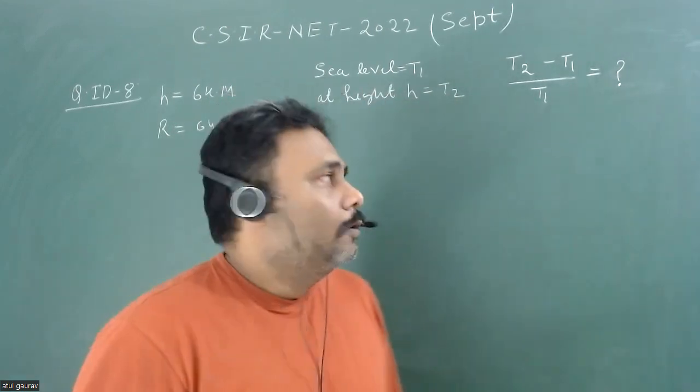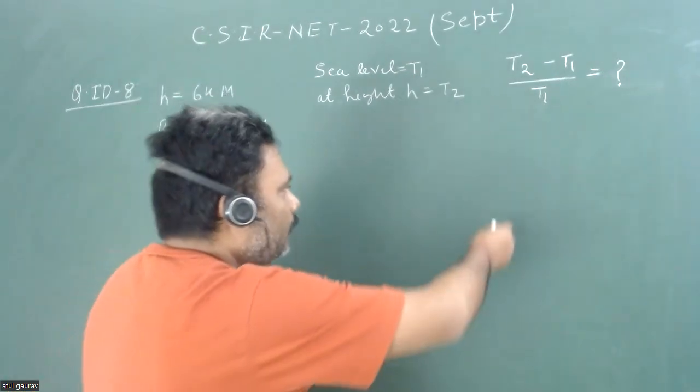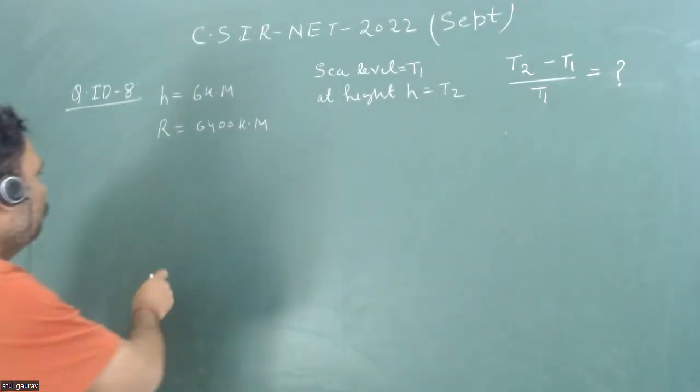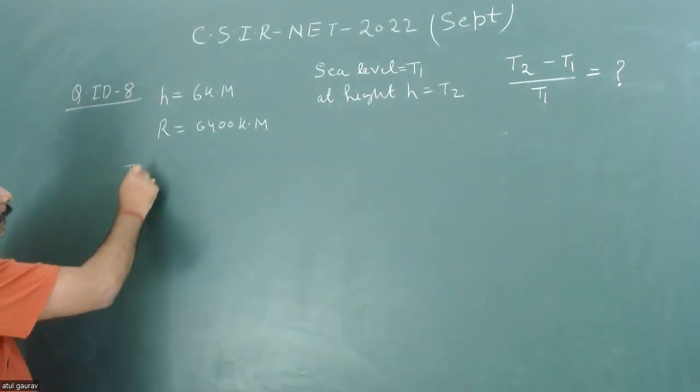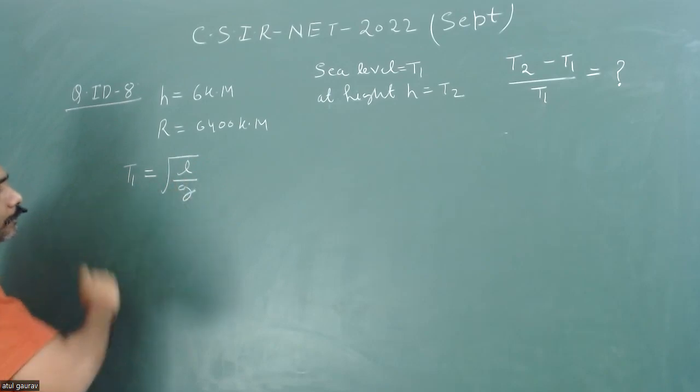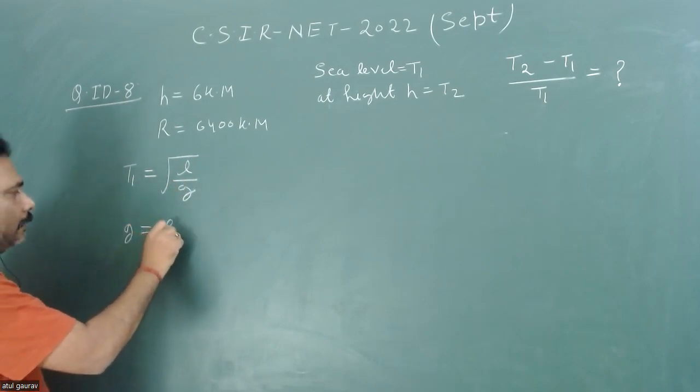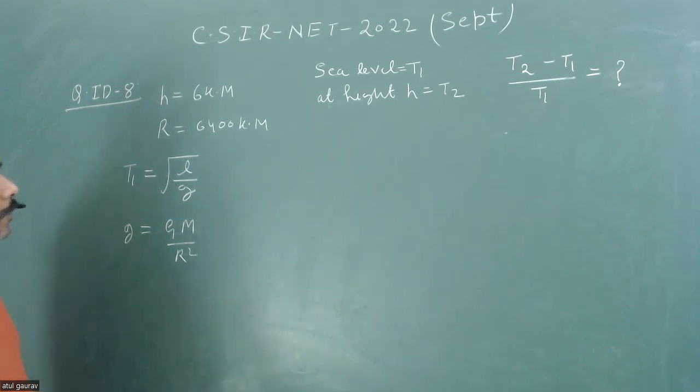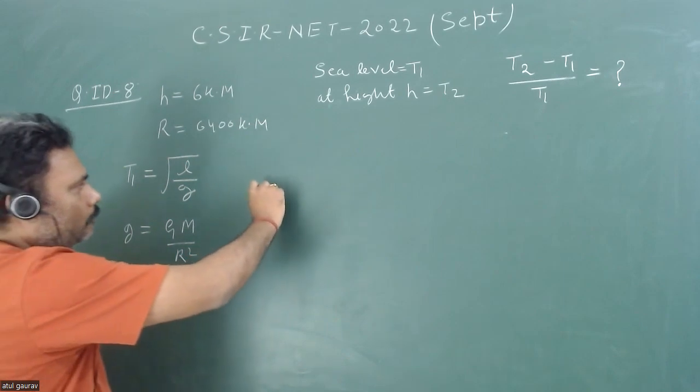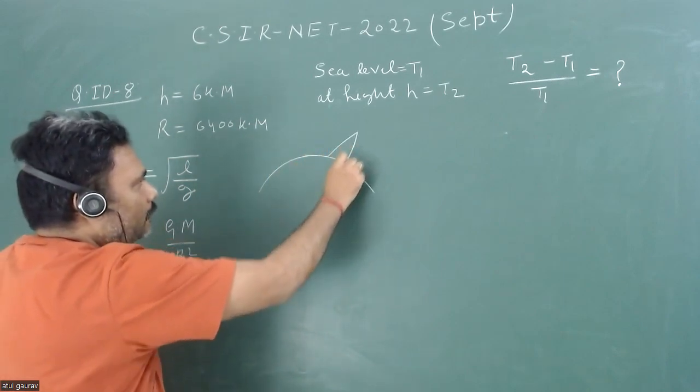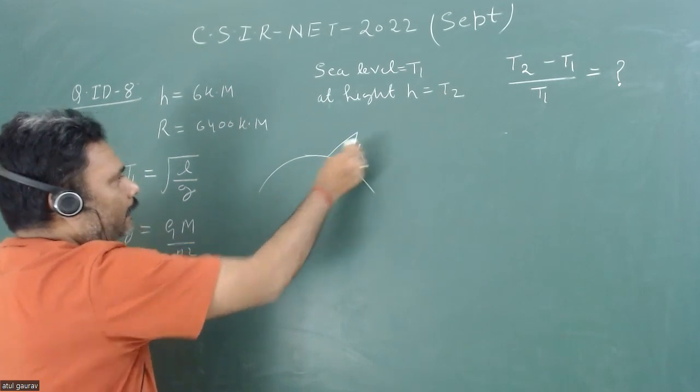We all know that t1 is equal to root under l upon g, and g is basically given by GM upon r square. We can assume that this is our earth, this is our sea level, and this is some mountain at height h.